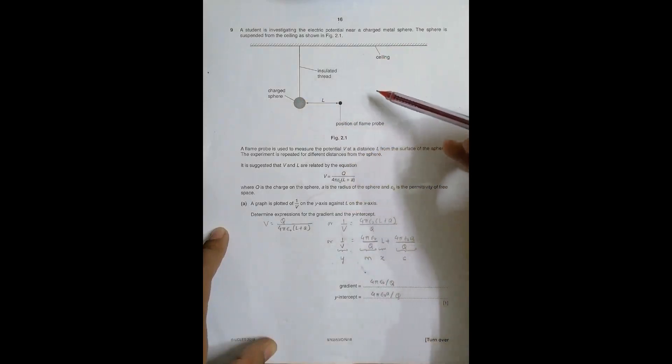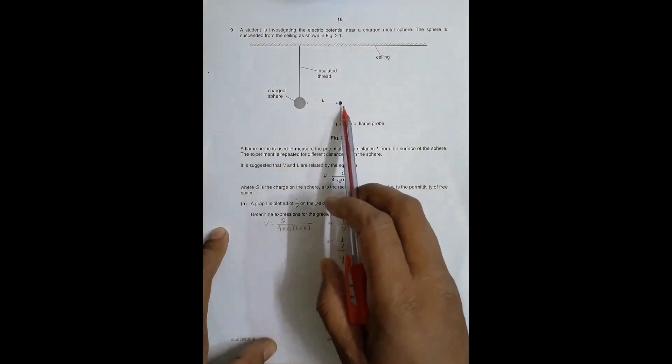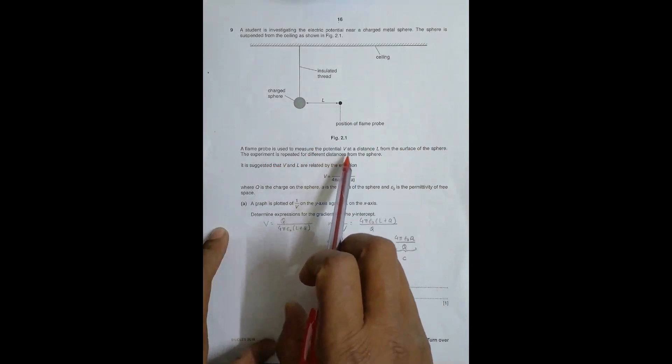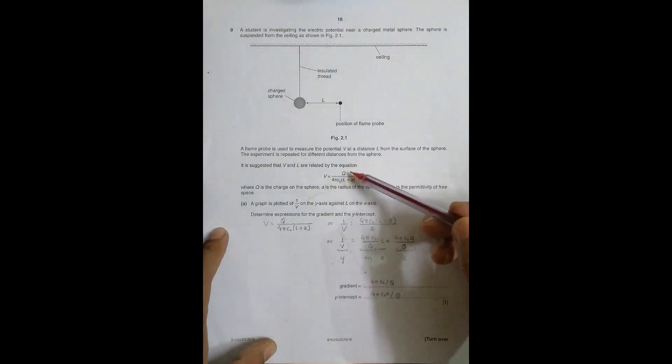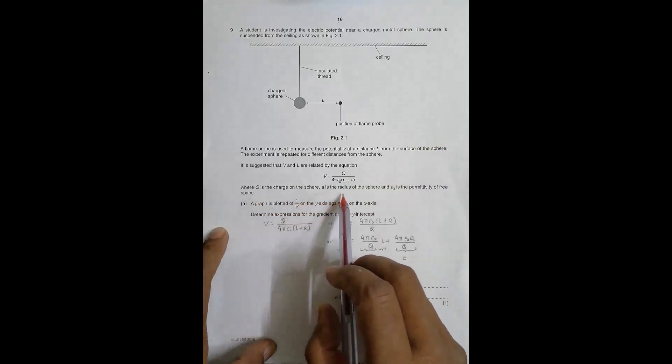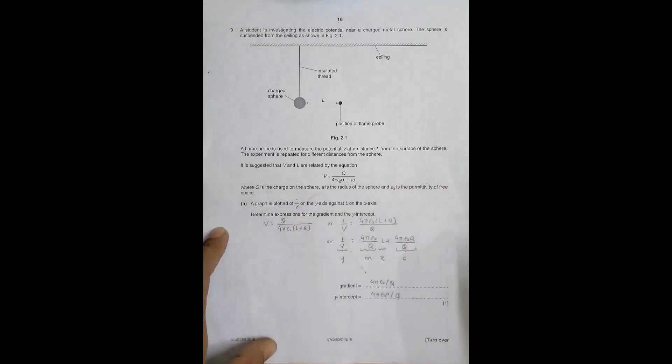The charged metal sphere is suspended from the ceiling. A flame probe is used to measure the potential V at a distance L from the surface of the sphere. The experiment is repeated for different distances. V and L are related by the equation V = Q / (4πε₀(L + a)), where Q is the charge on the sphere, a is the radius, and ε₀ is the permittivity of free space.